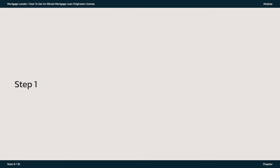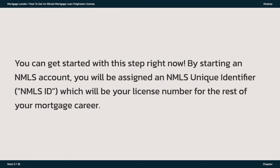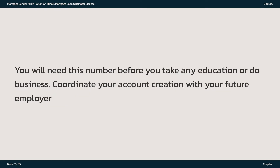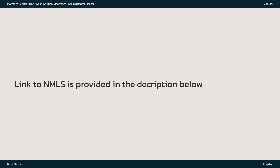Step 1: Create your NMLS account. You can get started with this step right now. By starting an NMLS account, you will be assigned an NMLS Unique Identifier, NMLS ID, which will be your license number for the rest of your mortgage career. You will need this number before you take any education or do business. Coordinate your account creation with your future employer. A link to NMLS is provided in the description below.